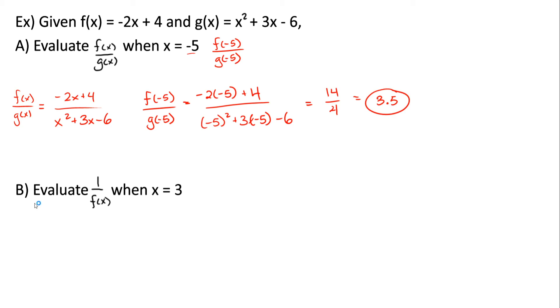For part B, we want to evaluate 1 over f of x when x is equal to 3. So 1 over f of x is equal to 1 over negative 2x plus 4, and when x is equal to 3, they're basically asking us to find 1 over f of 3, which would be equal to 1 over negative 2 times 3 plus 4, which comes out to be negative 1 half.